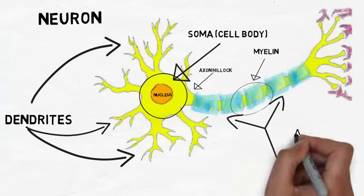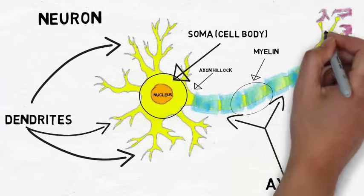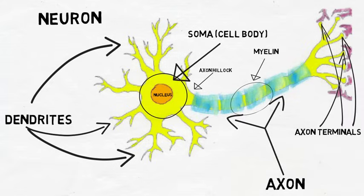The last step for the action potential is the axon terminals, also known as synaptic buttons. When the signal reaches the axon terminals, it can cause the release of neurotransmitter.